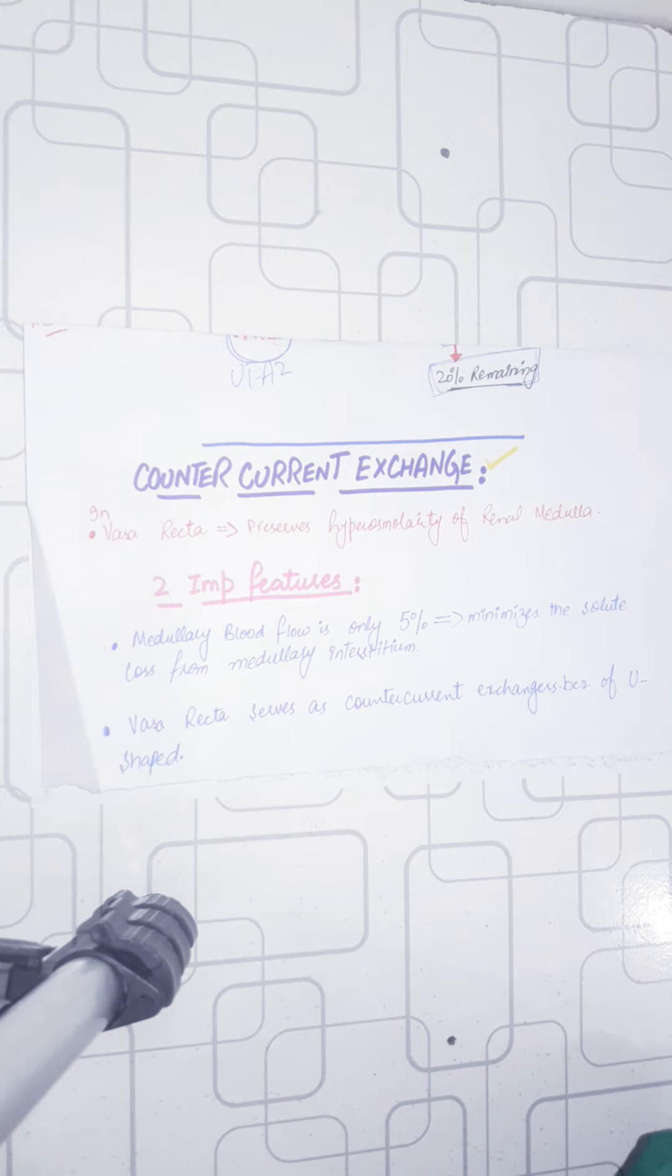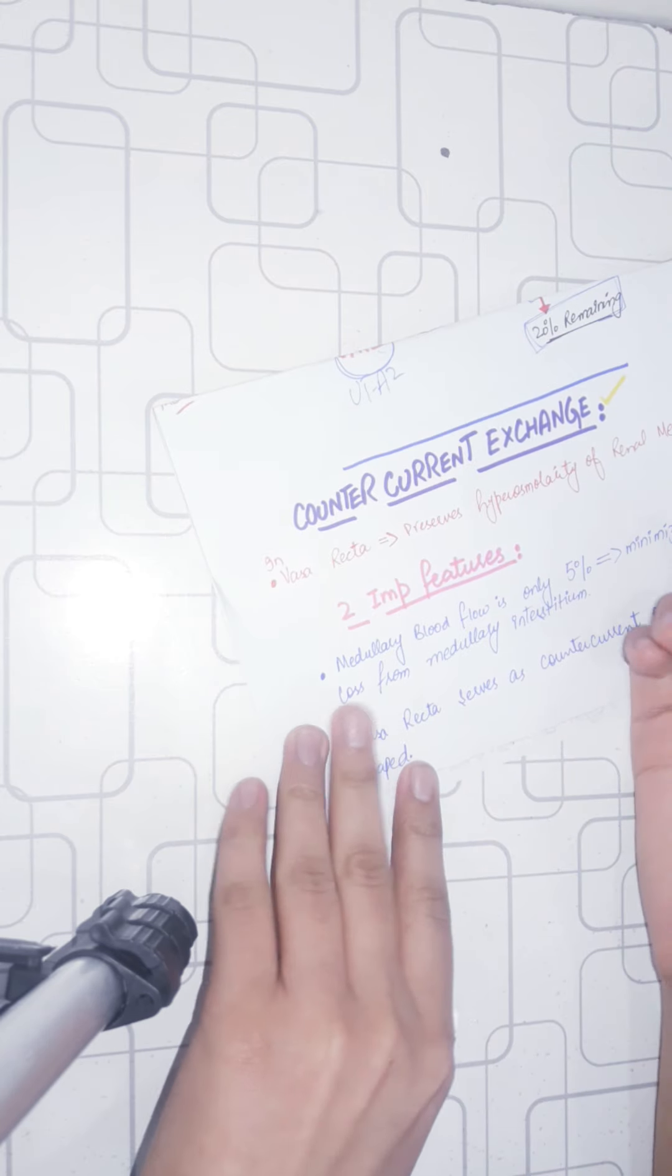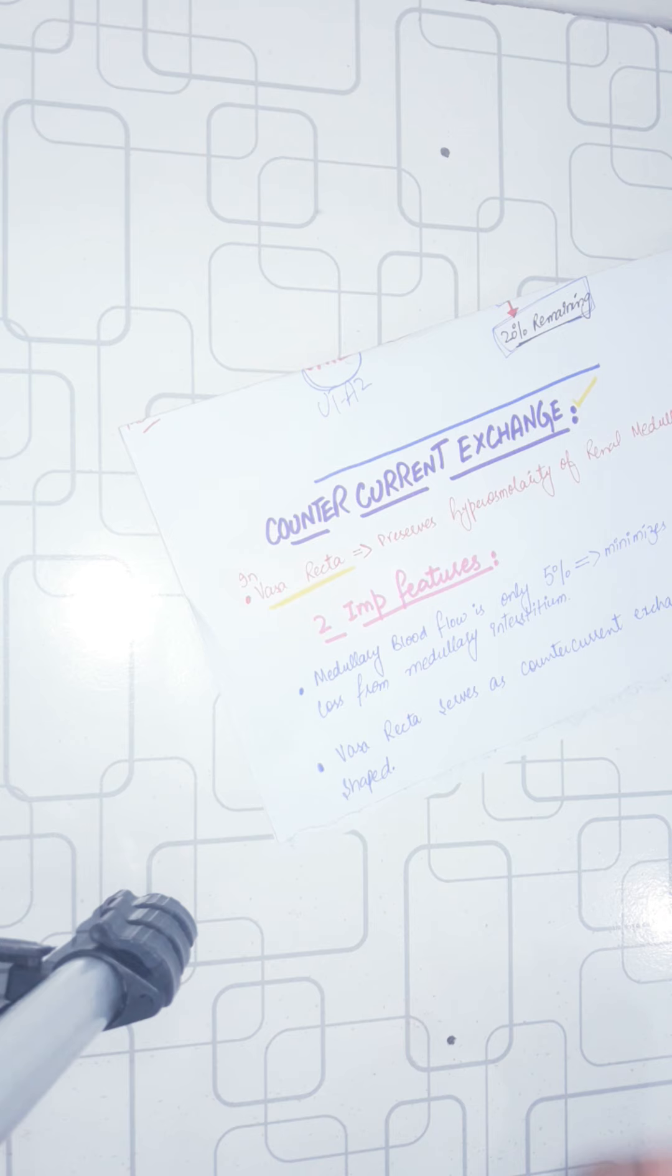The counter current mechanism can become hyperosmolar, but now that hyperosmolarity is created, it is important to maintain it. We have the work of counter current exchange, and counter current exchange is a mechanism in which one role is played by vasa recta. Vasa recta, we know, are peritubular capillaries, and you have nephrons which are juxtamedullary nephrons with longer parts of the loop of Henle.